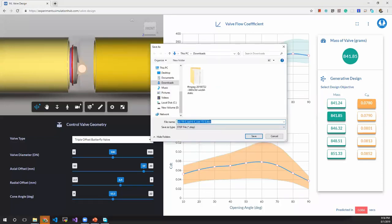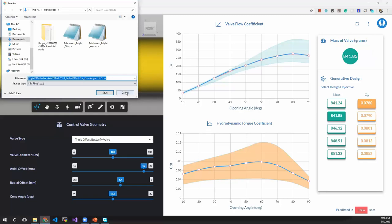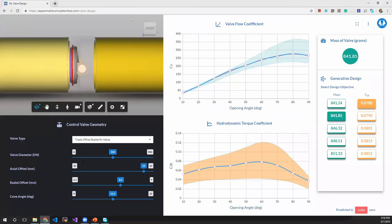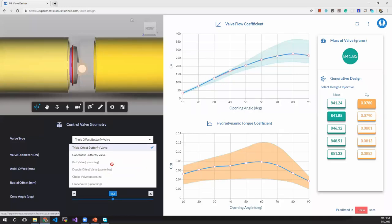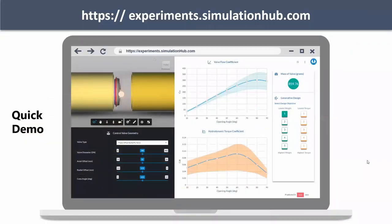Now what I can do is I can simply download this geometry. This will be downloaded in a step format. Here I can show you the window. The step file is ready to download. I can download and open it in my favorite CAD modeling software, or I can also download the parameters - a CSV file which contains all the inputs of the geometry as well as the flow performance coefficient and hydrodynamic torque coefficient. This was it about the current state of the application that we have created. We are working on other valve types and will be uploading them quickly.